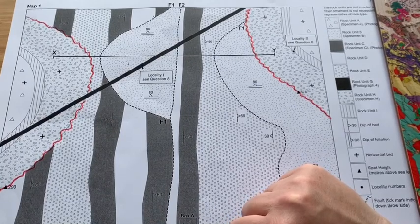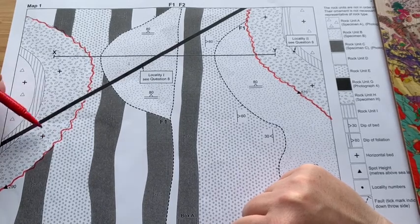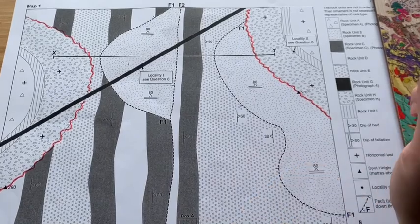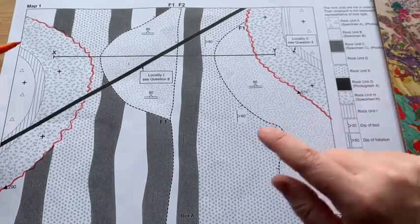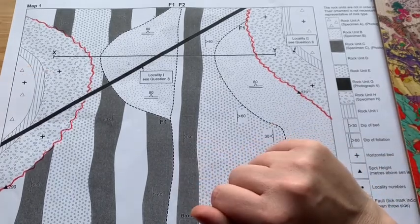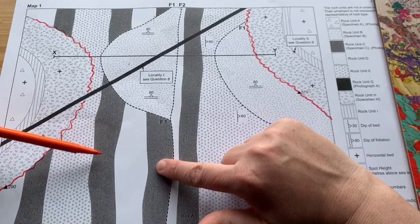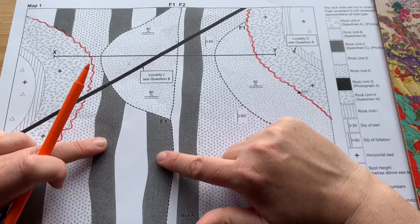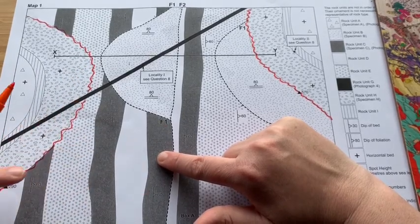Okay, so we've got faults, we've got an unconformity, we've got one igneous body across it. There should be some folds on the map as well. So if you look for repetition of units, the one that stands out to show the repeating is rock layer C, which is this grey layer here. This white layer isn't repeated, but these two are, and again, it's repeated over here. So we've got a series of folds.